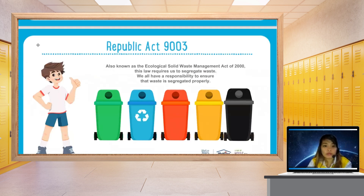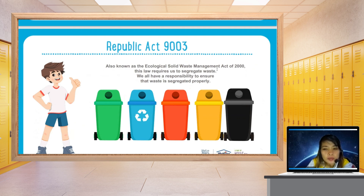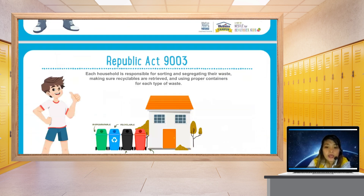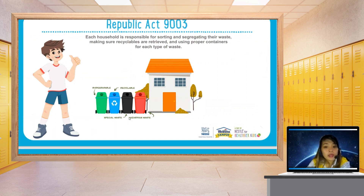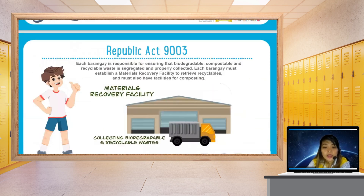Did you know that we have Republic Act 9003, also known as the Ecological Solid Waste Management Act of 2000? This law requires citizens to segregate waste. We all have a responsibility to ensure that waste is segregated properly. Each household is responsible for sorting and segregating their waste using proper containers. For example, the green bin is for biodegradables, the blue one is for recyclables, the black one is for special waste, and another is for hazardous waste.